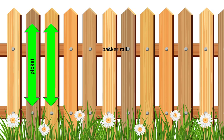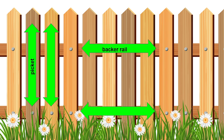Do you see any other parallel lines? What about the backer rails? There are two of them. They're the same distance apart and they never meet. They are parallel.